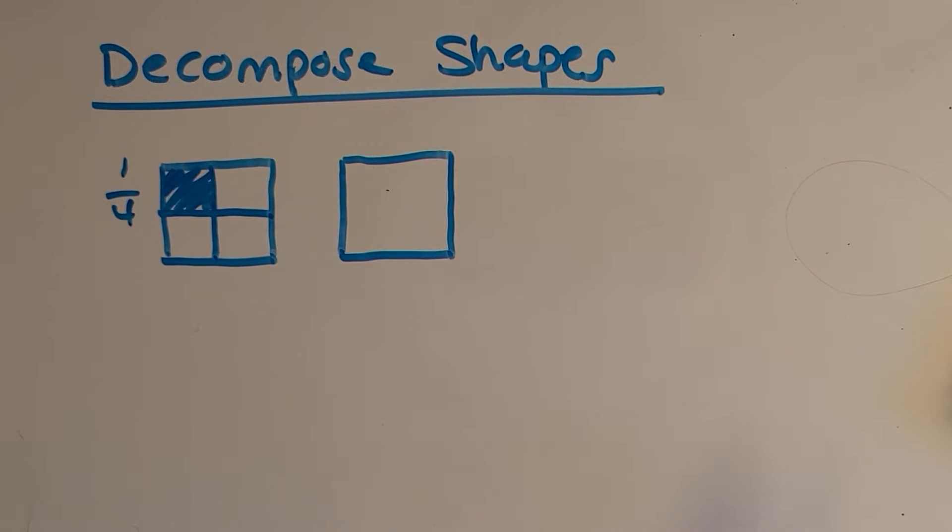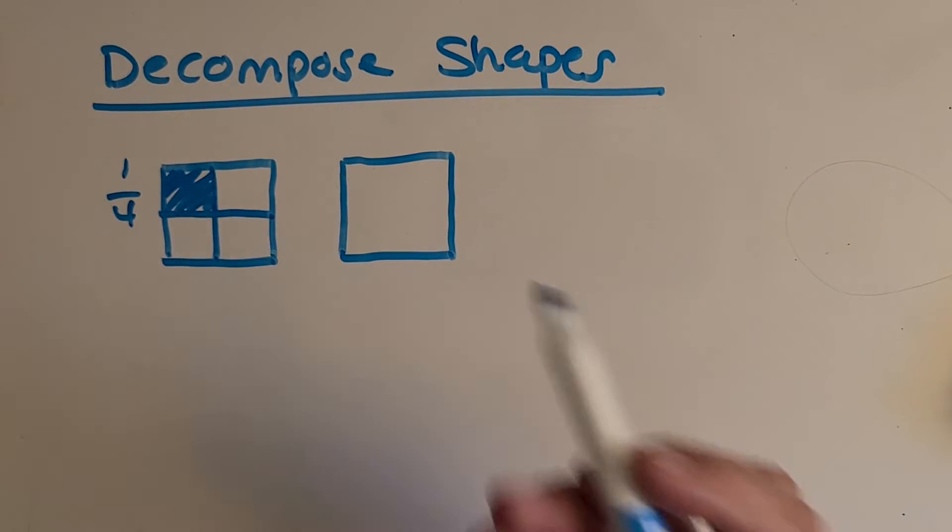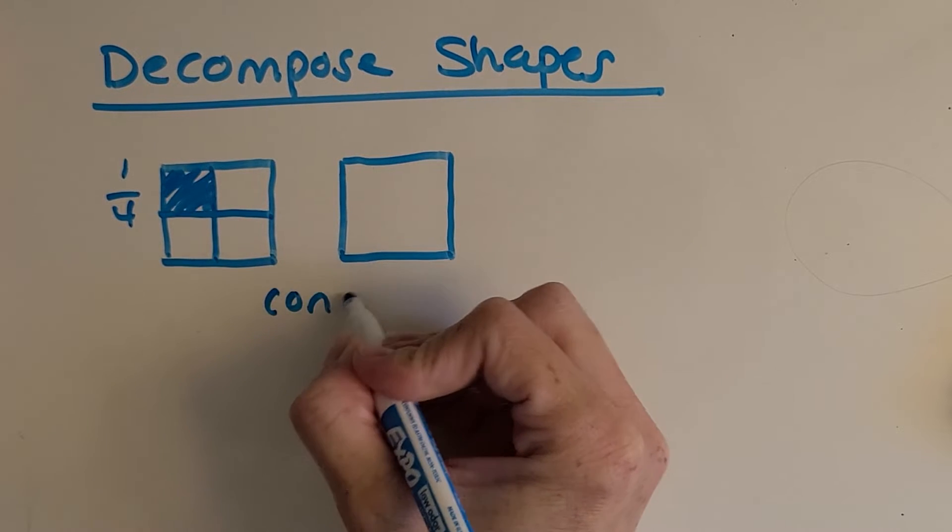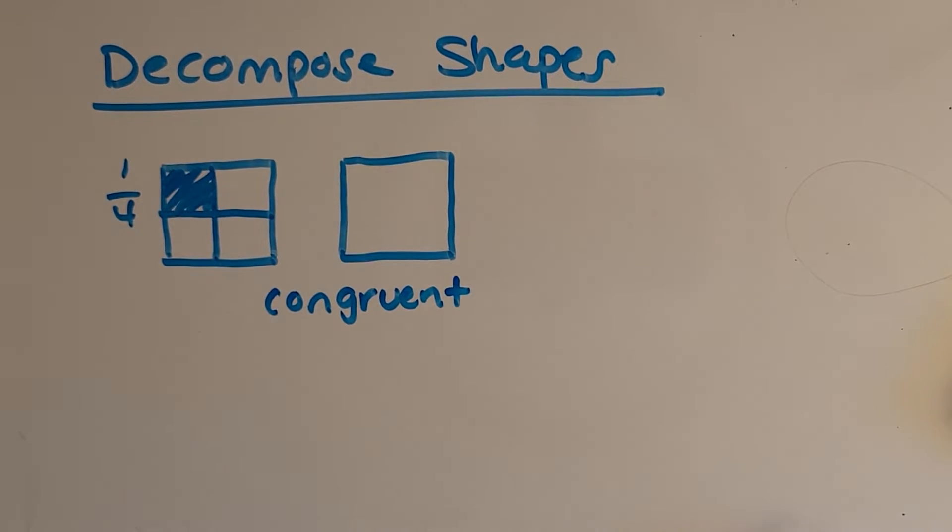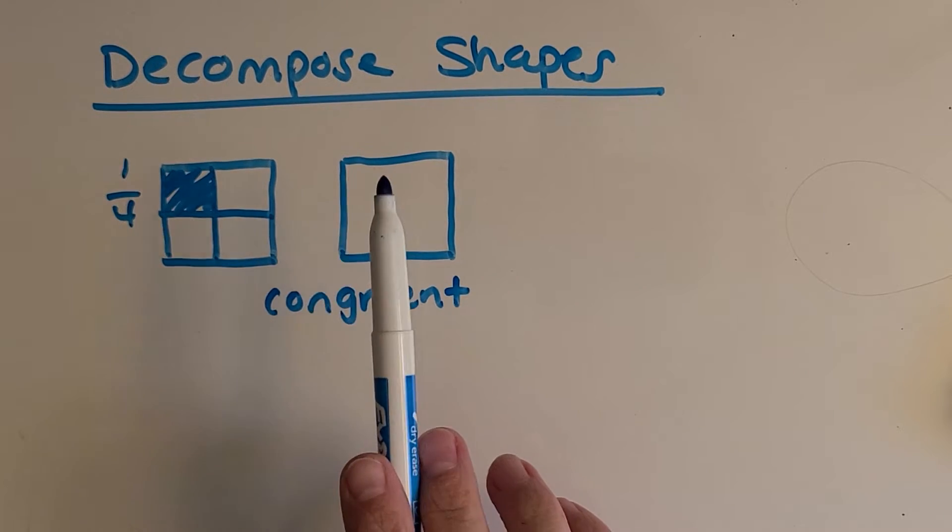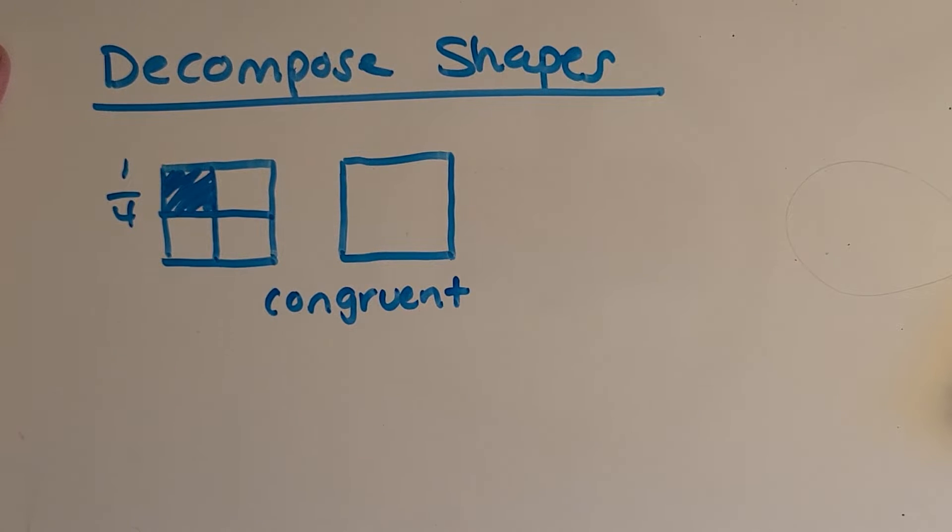Now I want to see if you can think of a way to cut this other square. I made a congruent square. Do you know what the word congruent means? You may be making some guesses. It means that it's the same size, same shape. So it's a square, same size. Now I want to see if we can cut it up differently, but still represent four equal parts. See if you can think of a way.